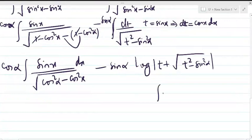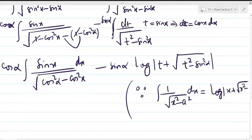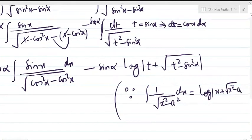This follows from the standard formula: ∫ 1/√(x² - a²) dx = log|x + √(x² - a²)| (base e, i.e., ln). You can write it as log base e or ln.